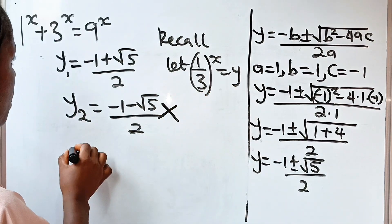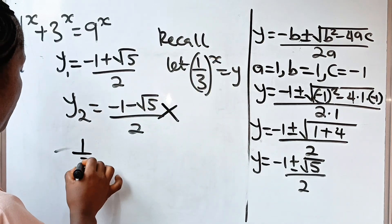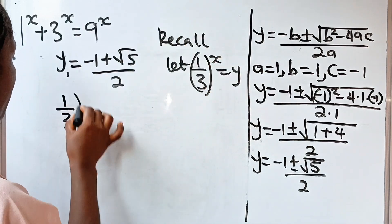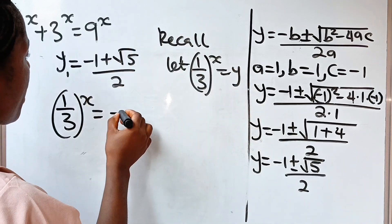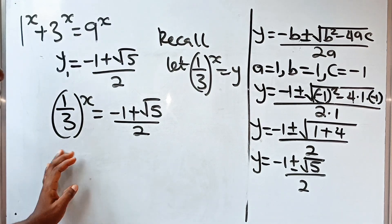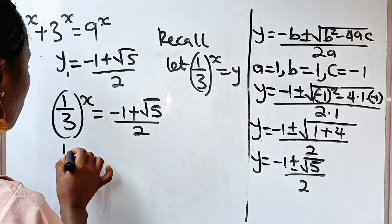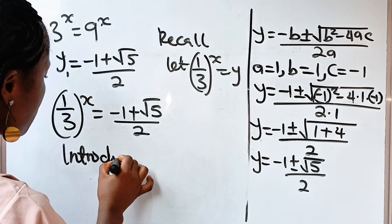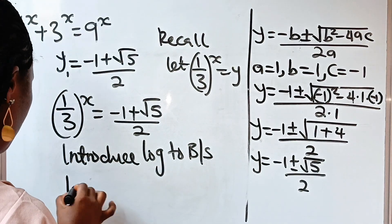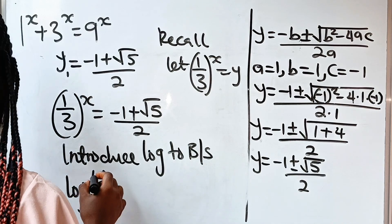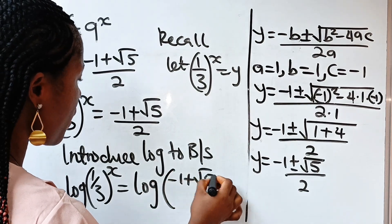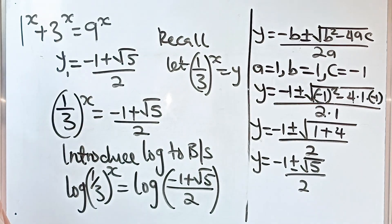Now, remember that 1 over 3 raised to the power of x is equal to our y, which is minus 1 plus square root of 5, divided by 2. Like I said, we can only solve this using log since what we are looking for is our power. So we introduce log to both sides. We are going to have log of 1 over 3 raised to the power of x, is equal to log of minus 1 plus root 5 divided by 2.